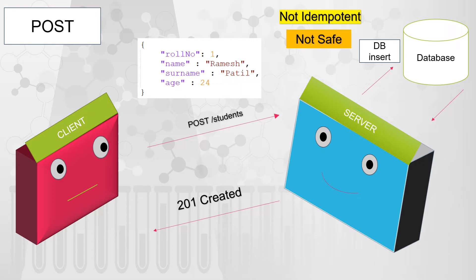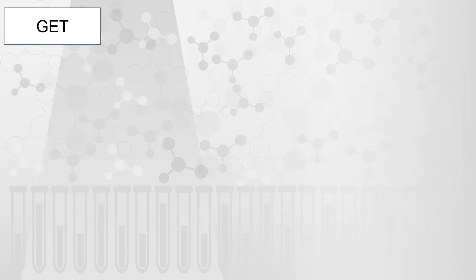POST is not idempotent, and it is also not safe. A safe HTTP method is one which does not alter the state of a resource on the server side. In the case of POST, it creates a new resource on the server, which is definitely considered a state change — hence POST is not safe.